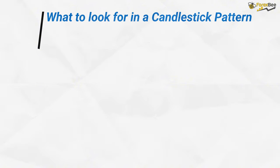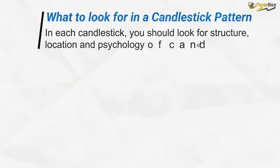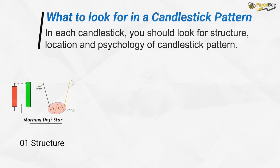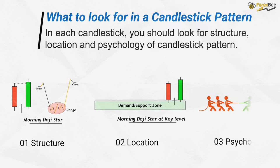Before we start discussing the patterns individually, let's take a close look at what you should be looking for in each pattern that you find on the chart. First of all, you should pay attention to the structure of the candle to ensure the pattern you've detected is correct. After that, you should look at its location, such as whether it has formed in a trending or ranging market. Finally, you should understand the psychology of the pattern so you can trade it profitably.